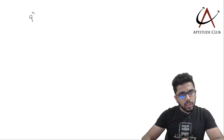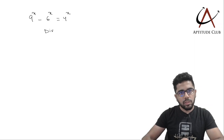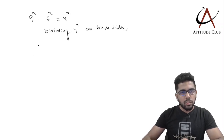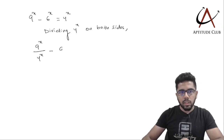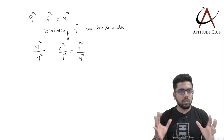The equation with us is: 9 to the power x minus 6 to the power x is equal to 4 to the power x. The first step is to divide both sides by 4 to the power x. So this becomes 9 to the power x divided by 4 to the power x, minus 6 to the power x divided by 4 to the power x, equals 4 to the power x divided by 4 to the power x. Very simple step.